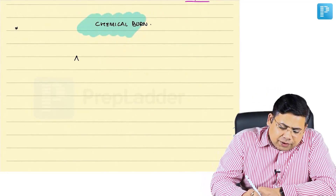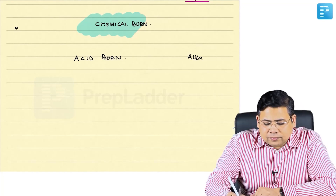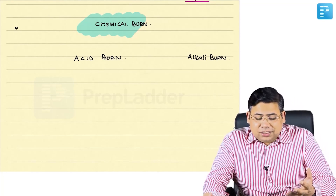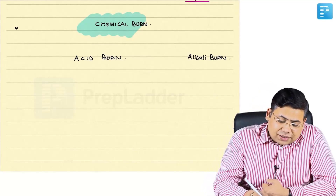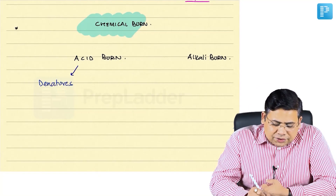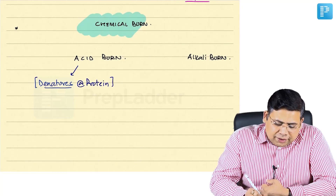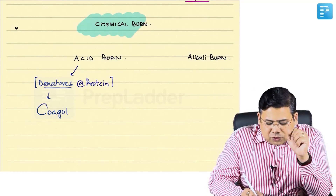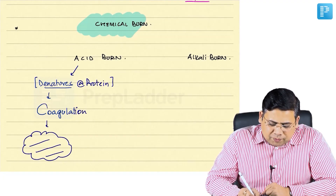Chemical burns can be acid burns or alkali burns. Acid burns are less dangerous than alkali burns. The reason is that acid denatures the protein, and because of this denaturing of protein, there is going to be coagulation of the protein. Denaturation of protein causes coagulation.